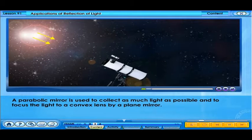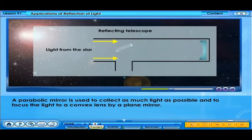A parabolic mirror is used to collect as much light as possible and to focus the light to a convex lens by a plane mirror.